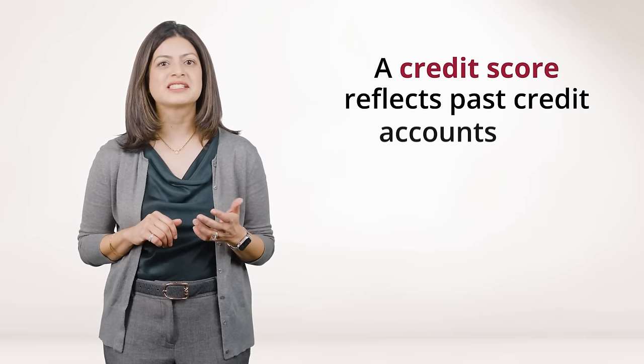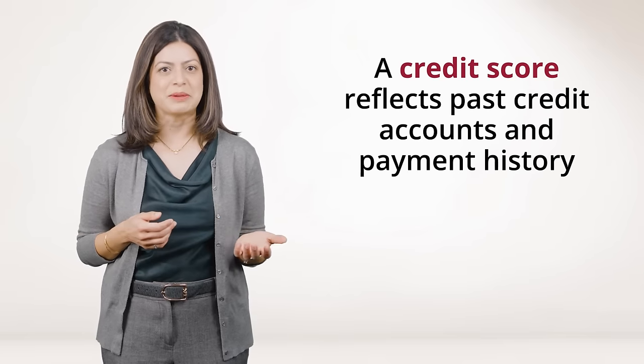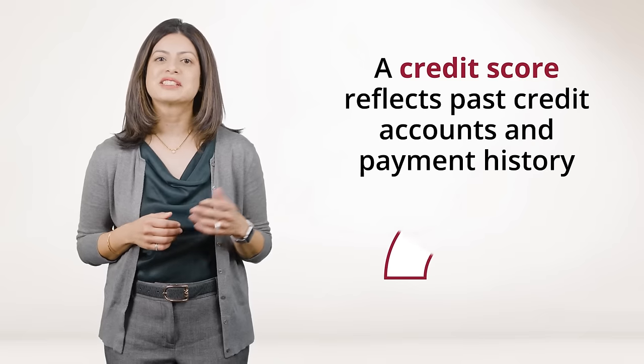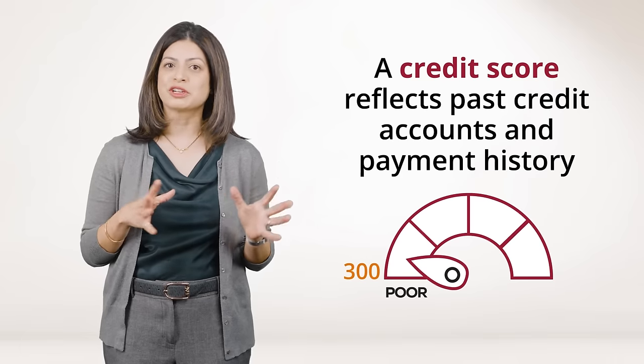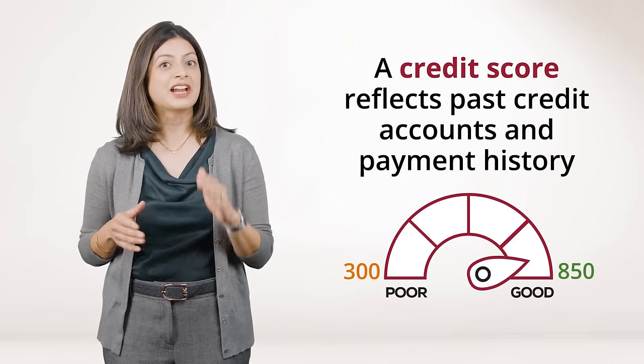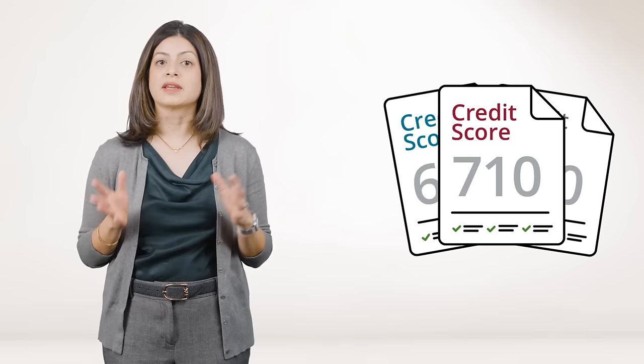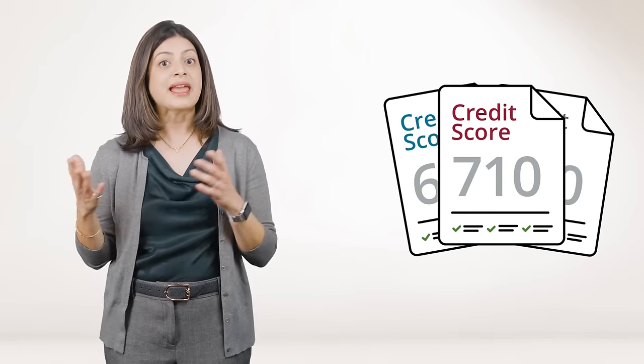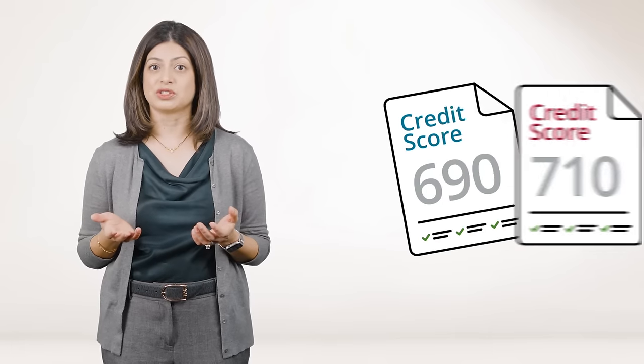A credit score reflects things like the types of credit you have, your past credit accounts, and your payment history. At Equifax, some of the most commonly used credit scores range from 300 to 850, and the higher the score, the better. Remember, you don't have just one credit score, and your credit scores may be different depending on the company providing the score, the data the score is based on, and the method of calculating the score.